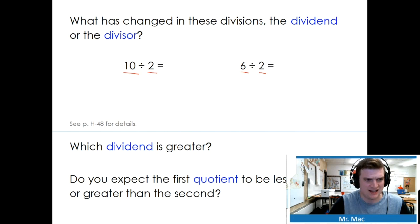Do you expect the first quotient to be less than or greater than the second? Quotient is answer. Which one's going to be greater? 10 divided by 2 or 6 divided by 2? Well, since this is a bigger number, I would think my answer is going to be bigger. For example, half of 10 is 5. Half of 6 is 3.